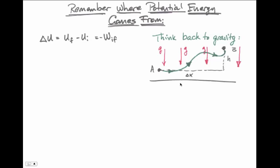The potential energy change — the difference between final and initial potential energy — is always equal to the negative of work. We know how to calculate work: it equals force dotted into distance, and we integrate. Therefore, the change in potential energy is the negative of the integral of F dotted into distance, or displacement.